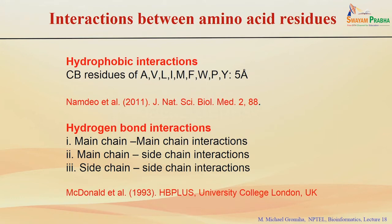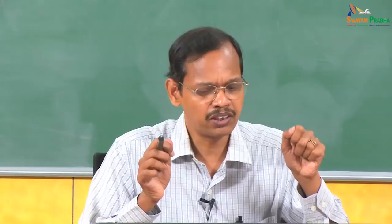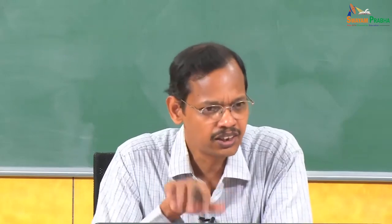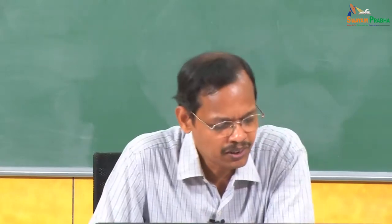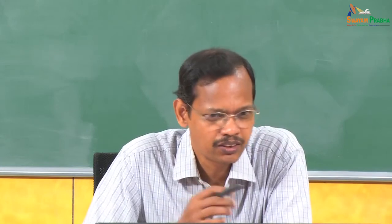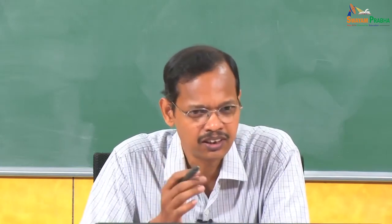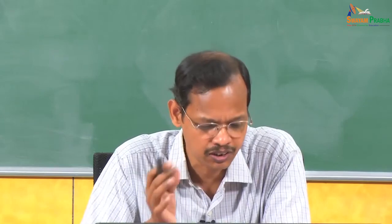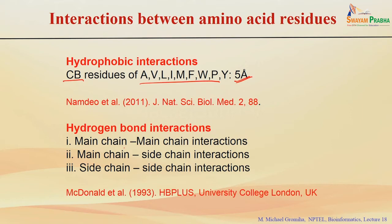For hydrophobic interactions, you look at C-beta residues because C-alpha is the main chain. Going to the side chains, you need C-beta. They consider specific hydrophobic residues and use a cutoff of 5 Ångström — if C-beta residues are within 5 Ångström, they are involved in hydrophobic interactions. For hydrogen bond interactions, the requirements are two electronegative atoms, one with an attached hydrogen, and the distance is about 2.5 to 3.2 Ångström. You can get main chain–main chain, main chain–side chain, and side chain–side chain hydrogen bond interactions by calculating the distance between heavy atoms.